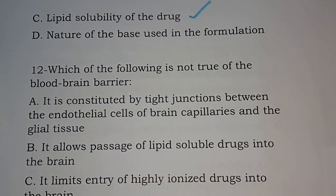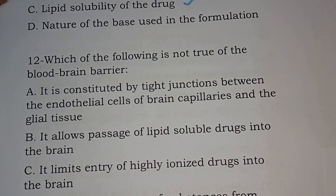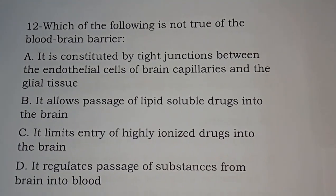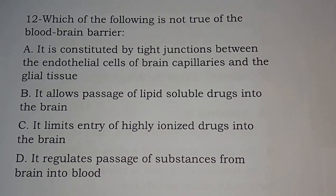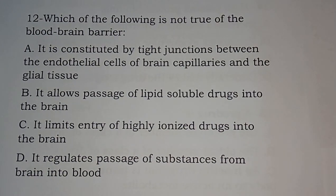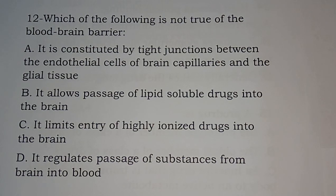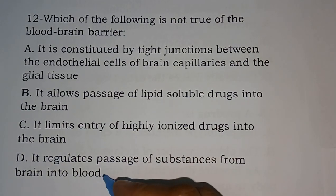Question number twelve: which of the following is not true of the blood-brain barrier? Options are: it is constituted by tight junctions between the endothelial cells of brain capillaries and the glial tissue; it allows passage of lipid-soluble drugs into the brain; it limits entry of highly ionized drugs into the brain; it regulates the passage of substances from the brain to blood. The correct answer is option D.